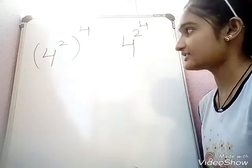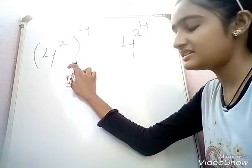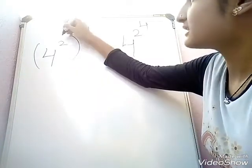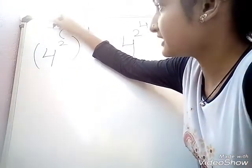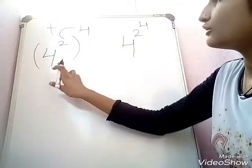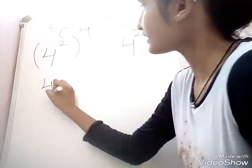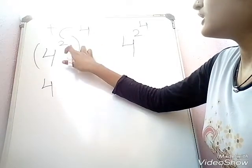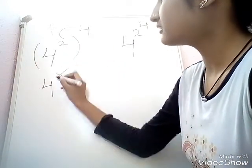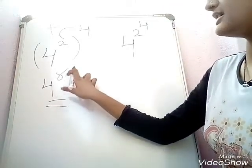Now see — in the first question, we have a bracket. So we have to directly do the multiplication of both powers: 4 times 2 — 2 fours are 8. So our answer will be 4 power 8.